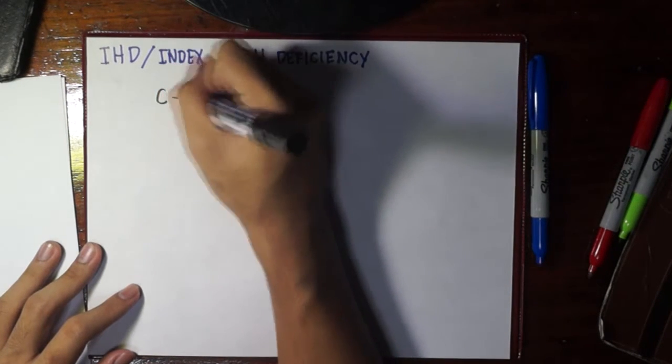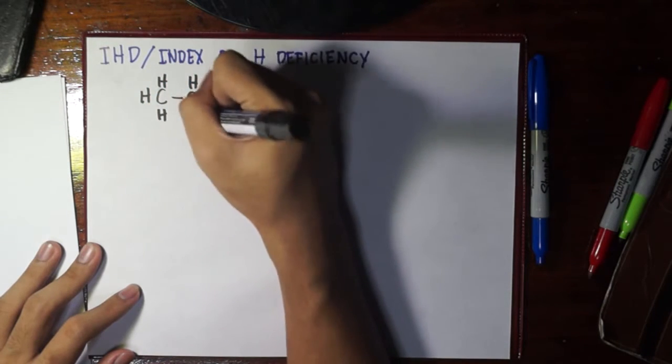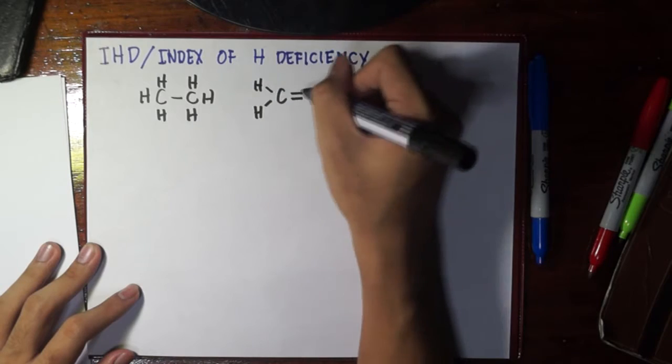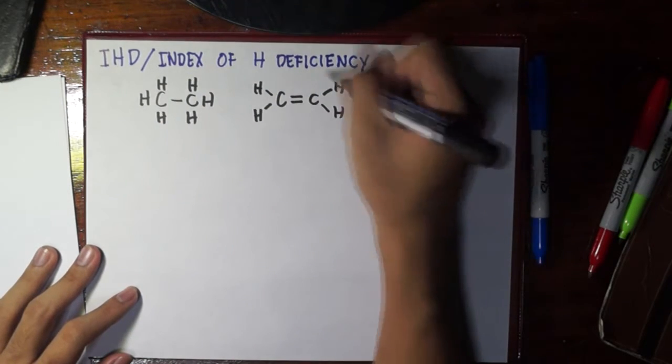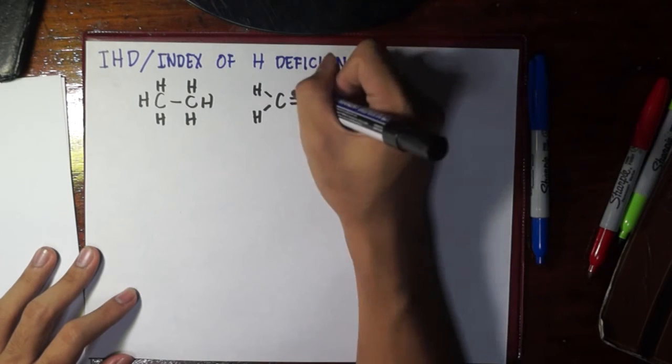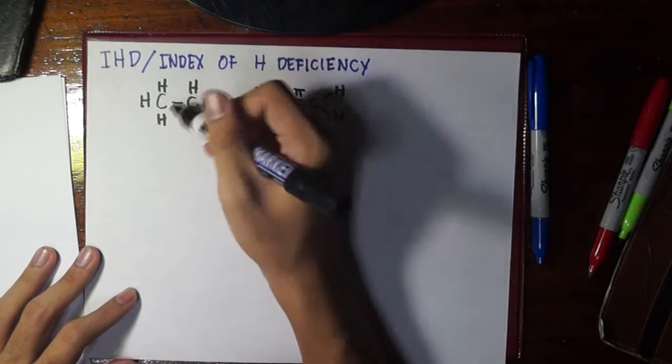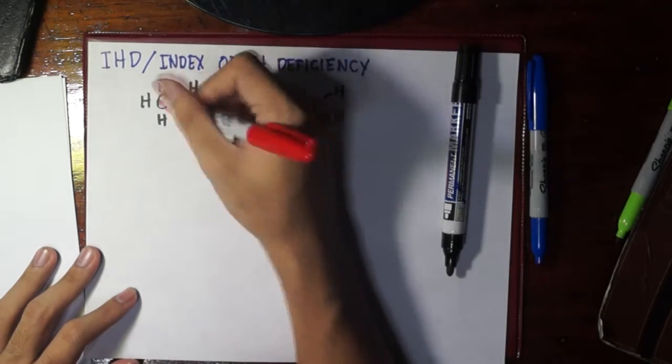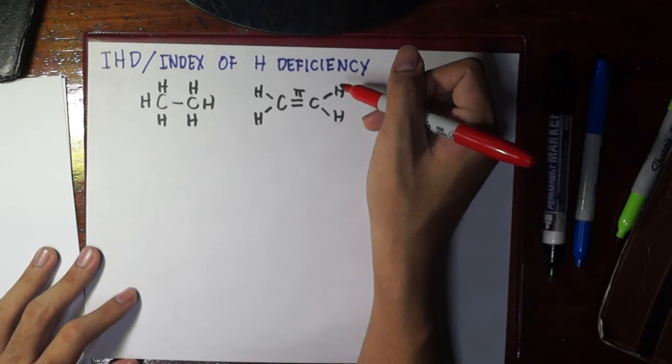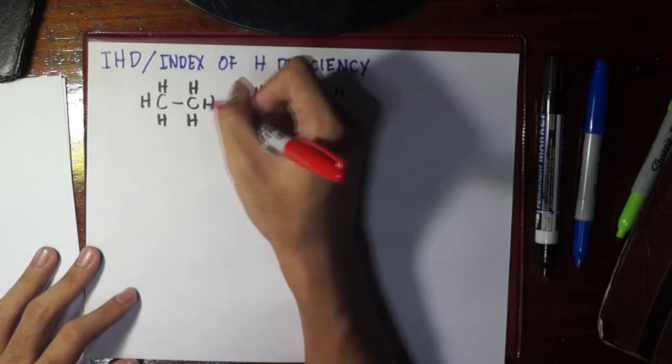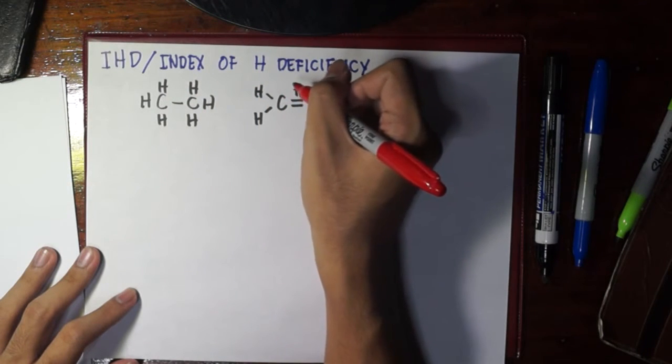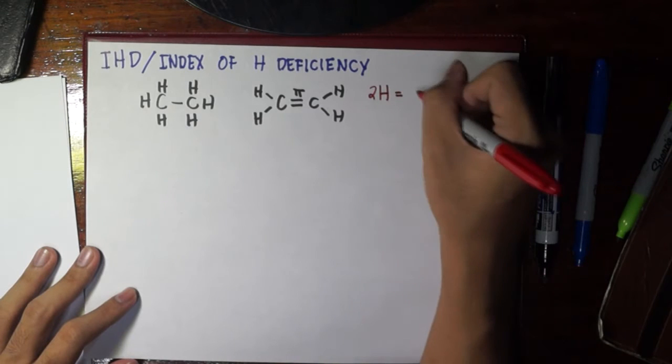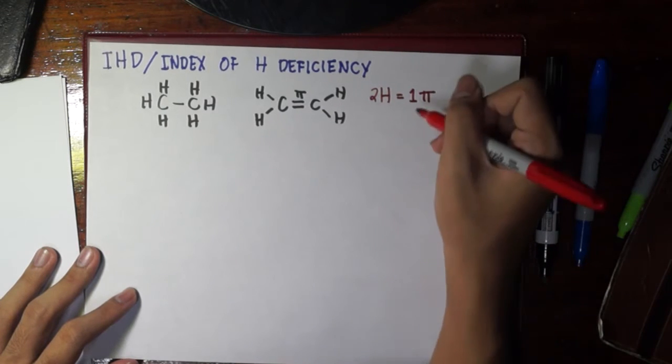For example, let's compare ethane to ethene. The first thing you have to do is, what's present in ethene that's not present in ethane? Of course, there is the presence of a pi bond, but what does ethane have more than ethene? Of course, we know that there is a presence of more hydrogens here as compared to ethene. How much more? We have four hydrogens here. We have six here. So, this means that in exchange for two hydrogens, we were able to come up with one pi bond.